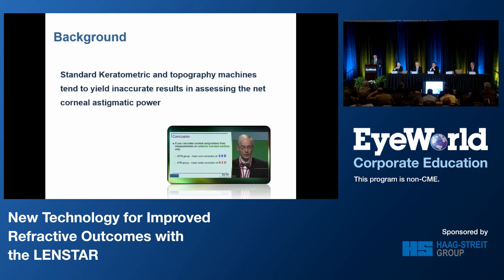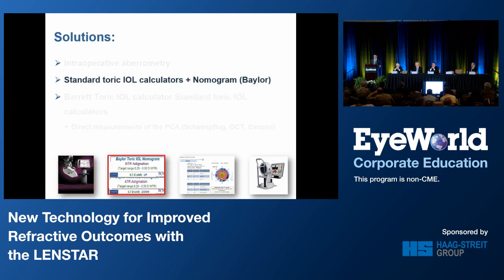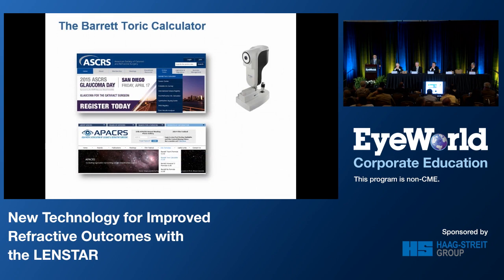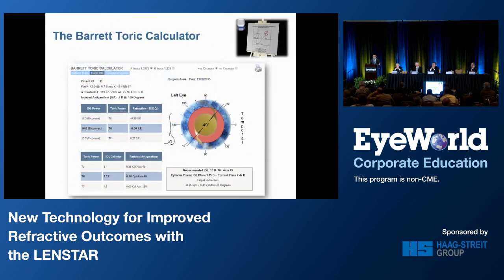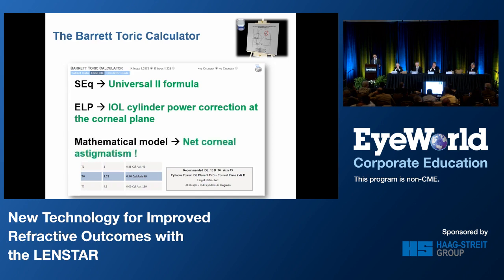Let's move on to the methods of calculation. Today we know that standard keratometry and topography machines tend to yield inaccurate results in assessing the net corneal astigmatic power. It has been four years since Doug Koch reminded us of the role of the posterior cornea in toric IOL calculation, and the next obvious step was to figure out how to implement this knowledge in daily practice. One solution is to use intraoperative aberrometry. Another is to use standard toric IOL calculators with a nomogram like the Baylor. The third option is to use the Barrett toric calculator, available on the ASCRS and APACRS websites as well as on the Lensstar device. This is an all-in-one solution: it uses the Universal II formula to predict the post-op spherical equivalent, uses the effective lens position to calculate the IOL cylinder power correction at the corneal plane, and uses a mathematical model to estimate the net corneal astigmatism by utilizing anterior corneal measurements.